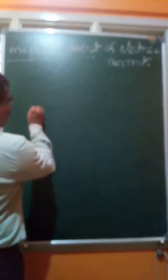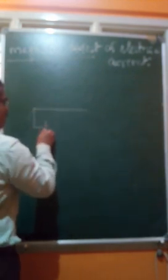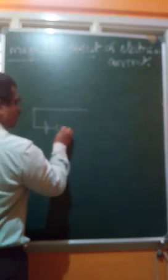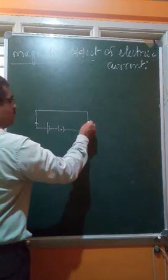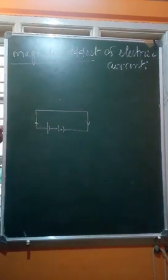You have studied about circuits in the previous class. Take a conducting wire and connect it to a battery or plug key. I have taken a simple circuit with a cell and a closed plug key. When the circuit is complete, electric charges start flowing from the positive to the negative terminal.